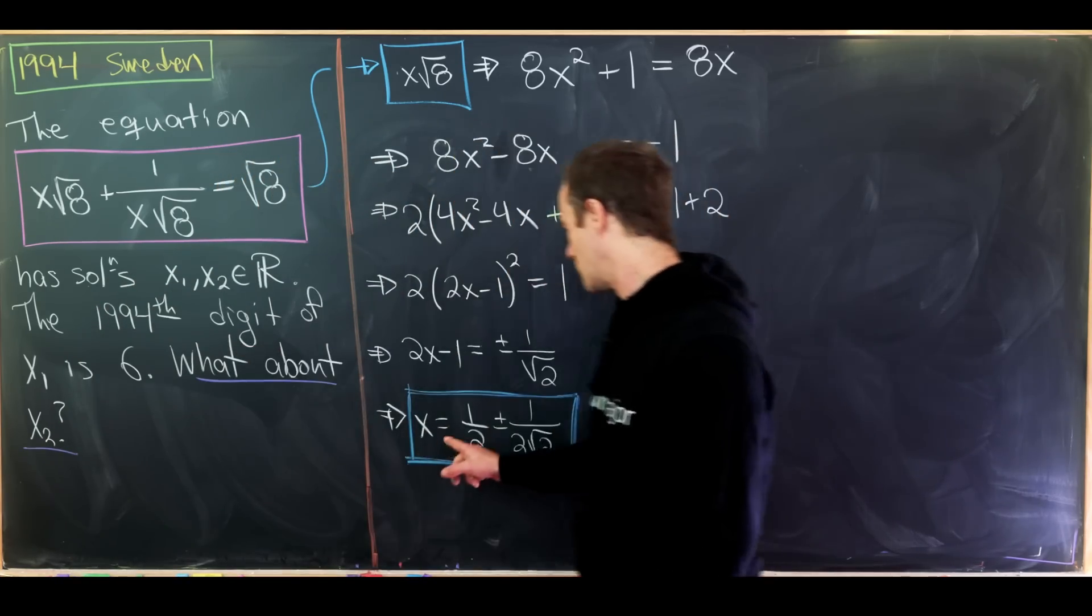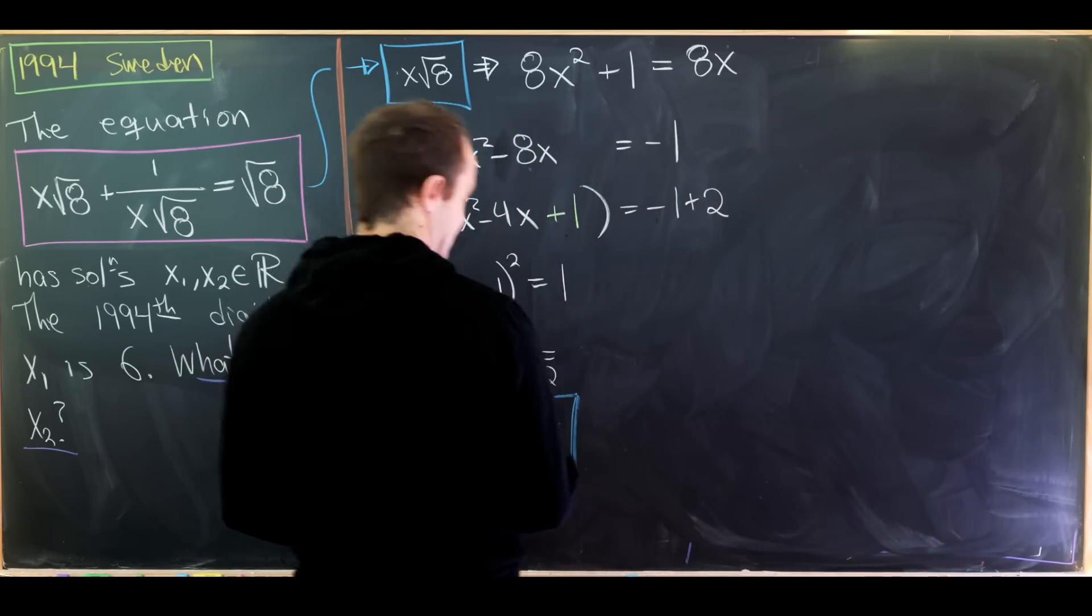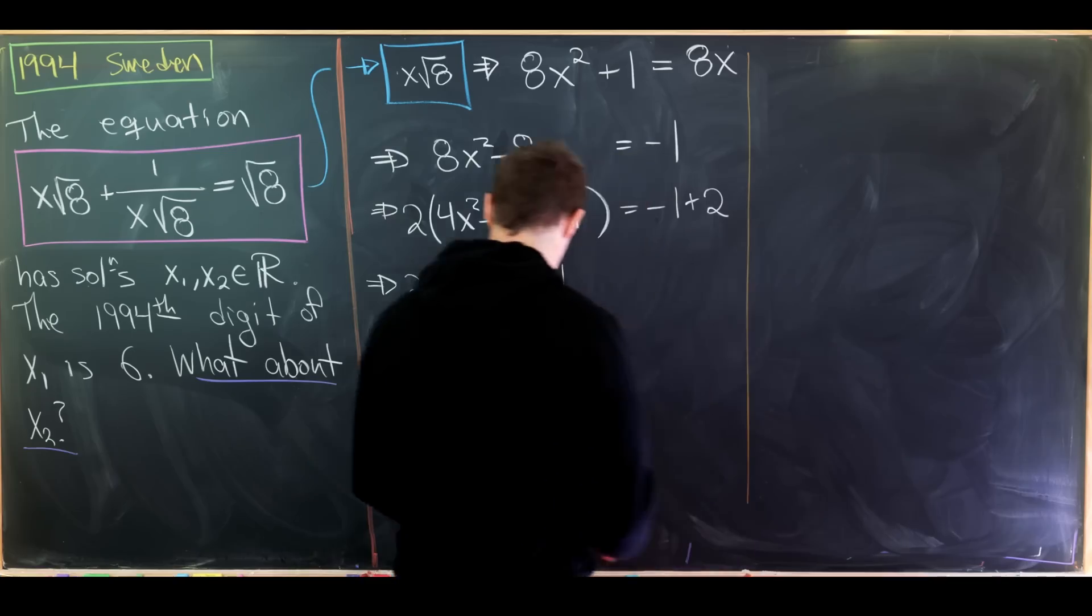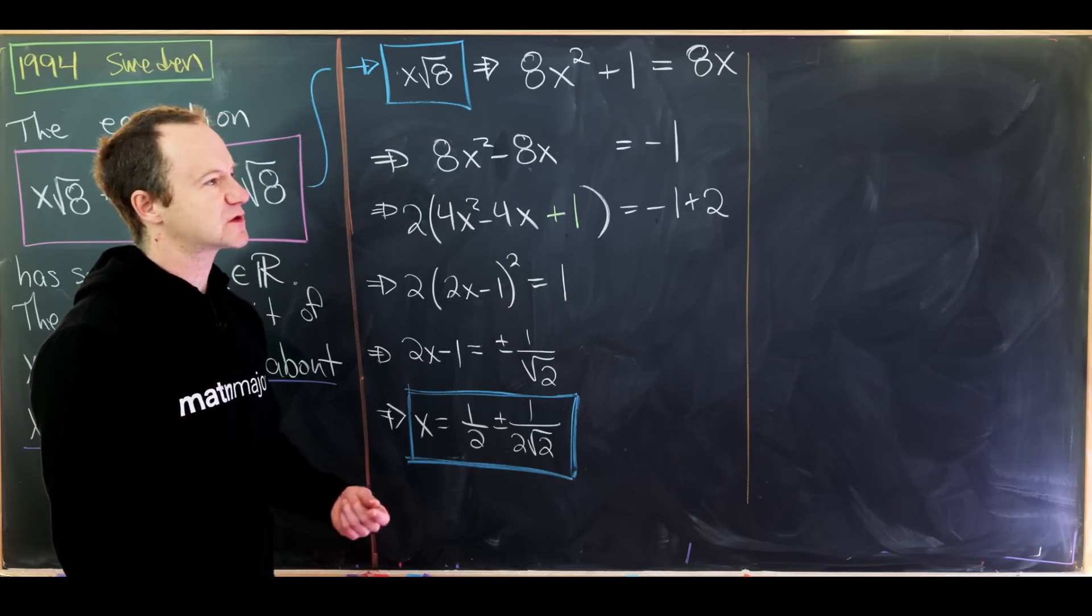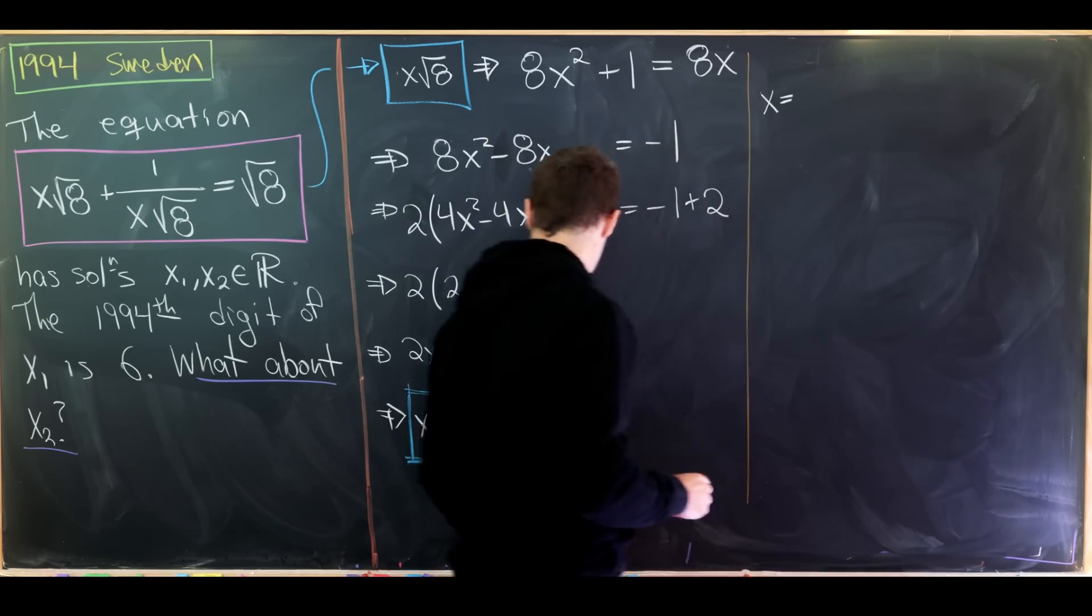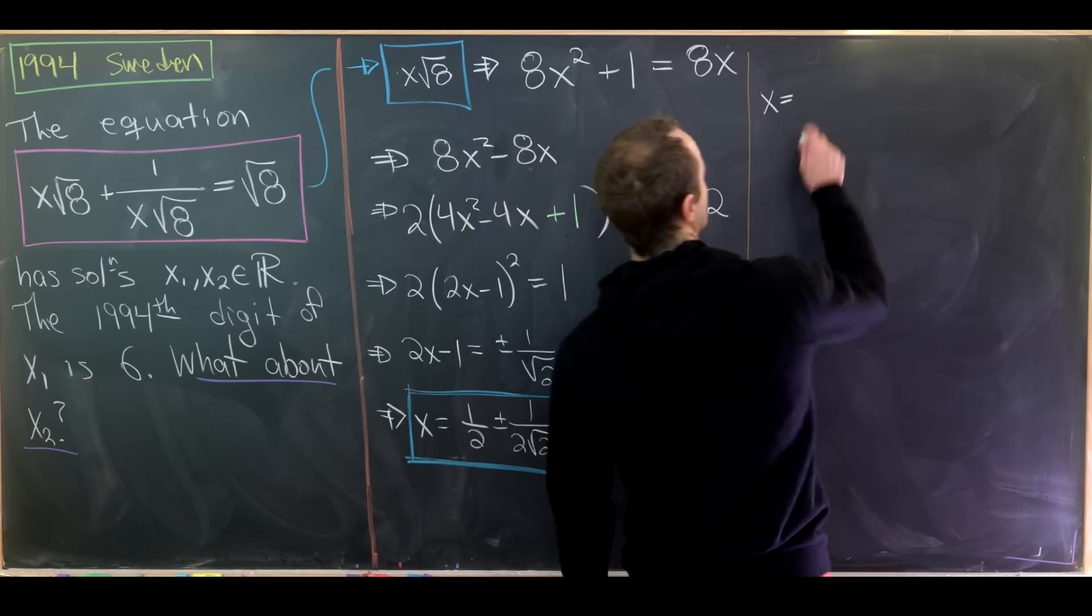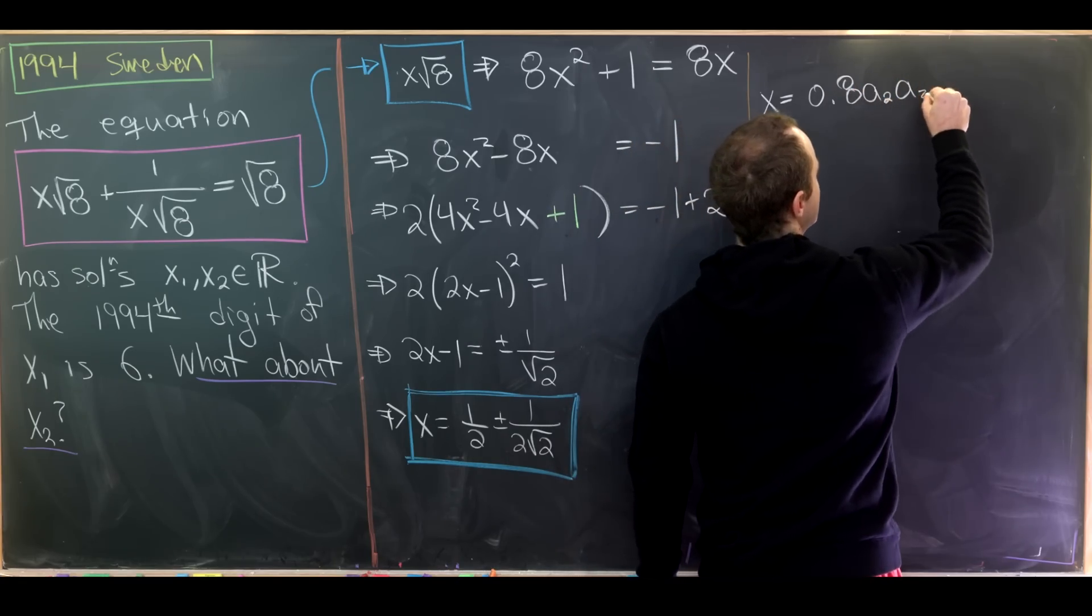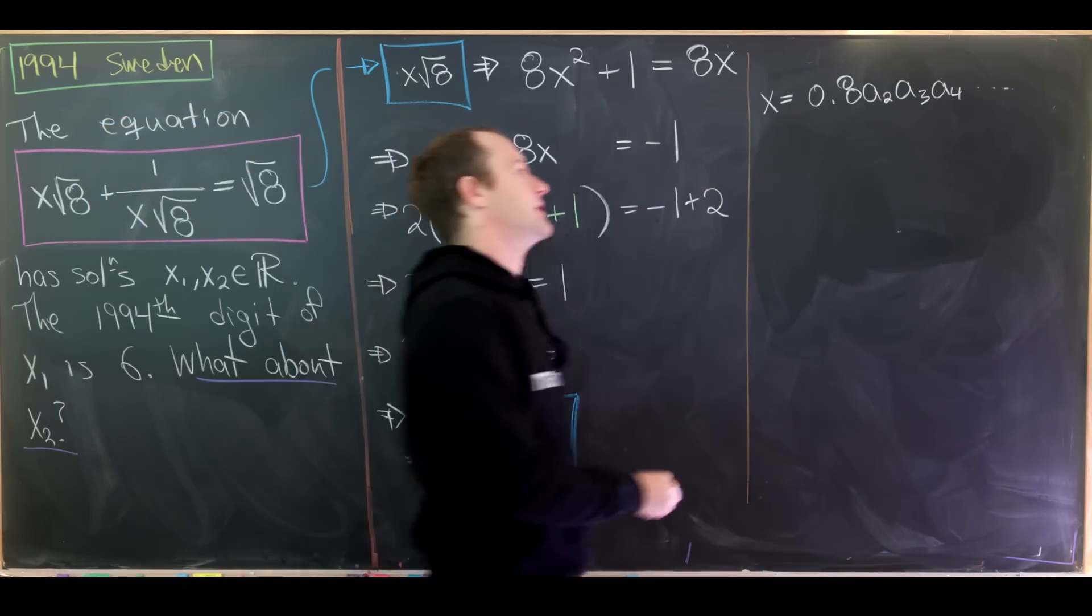Those are our two solutions. From what's given, we don't know which one of these is x1 and which one is x2. But we can see the sum of x1 and x2 as well as a quick approximation. A half is 0.5, and this is 1 over the square root of 8. But the square root of 8 is a little bit less than the square root of 9. So one of our solutions is going to be 0.5 plus 1 over something that's a little bit less than 3. In other words, we'll have 0.8 and then a sub 2, a sub 3, a sub 4, and so on. That's our first solution.